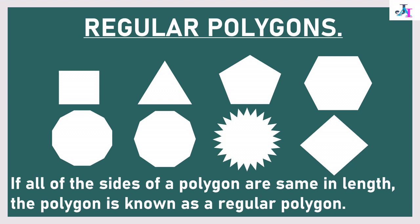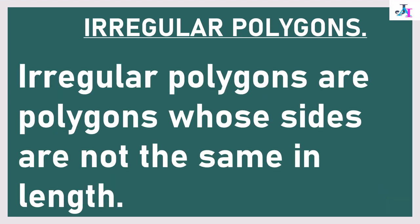Now let's look at what irregular polygons are. Irregular polygons are polygons whose sides are not the same length. If all the sides are not the same length, they are called irregular polygons.